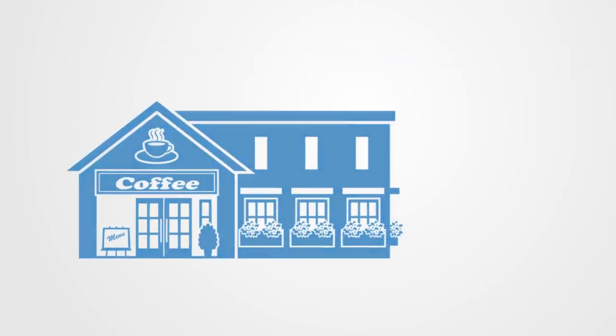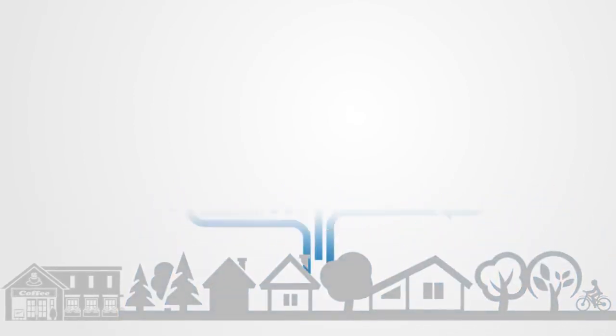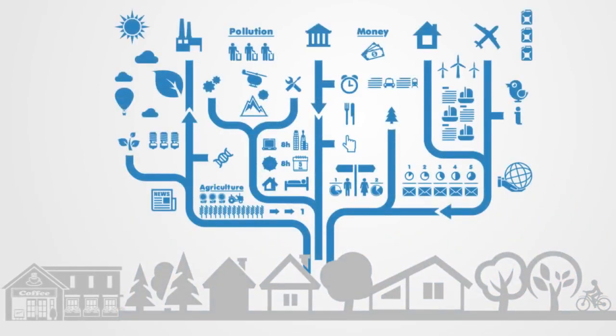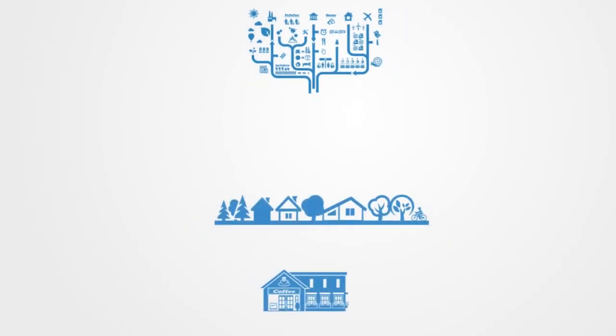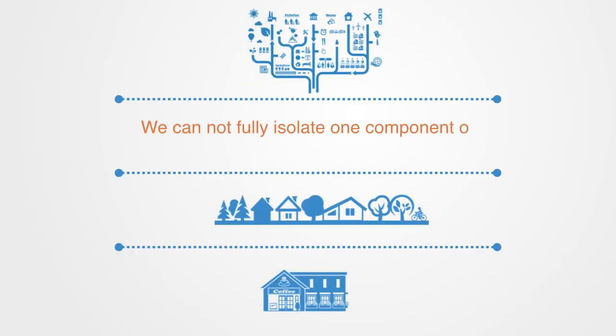A business is part of a local economy, which is part of a national economy, which in turn is part of a global economy. Each is interconnected and interdependent with the others. We cannot fully isolate one component or reduce the whole thing to one level, and this is a primary source of complexity.